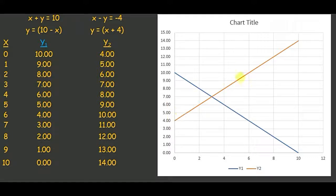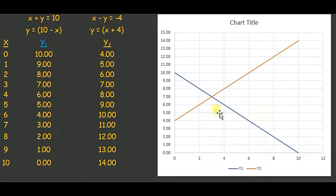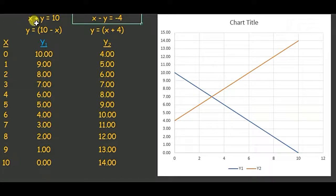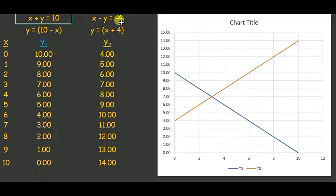From this graph, you can see the point of intersection which is x equals 3 and y equals 7. Y is the value 7 and x is halfway between 2 and 4, so x is 3 and y is 7. This means 3 boys and 7 girls would be the common value for these two equations. If you replace 3 for x and 7 for y in the first equation, you get 3 plus 7 as 10. If you replace 3 for x and 7 for y in the second, you get negative 4.